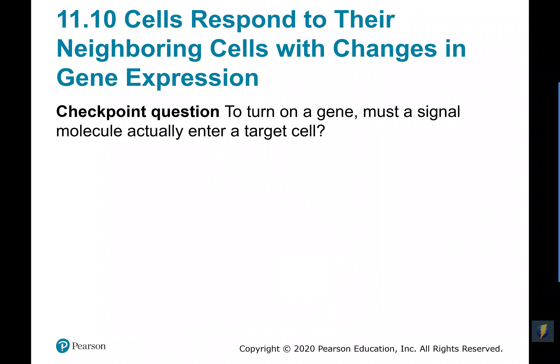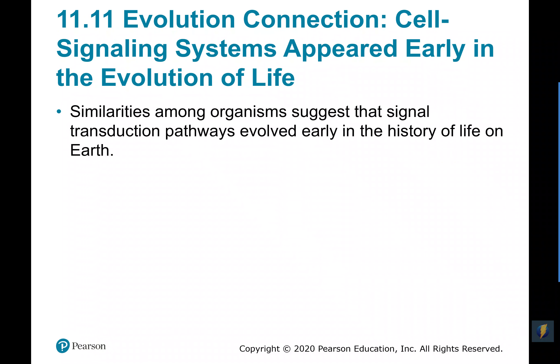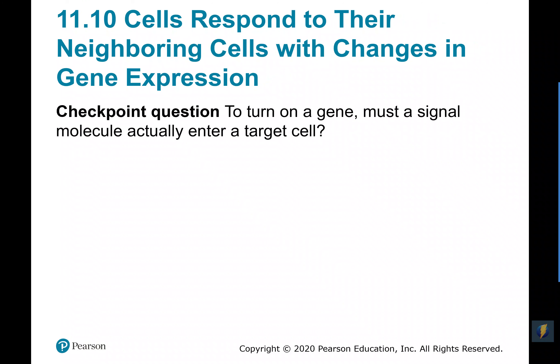The question is: to turn on a gene, must that initial signal molecule actually enter the target cell? The answer is no — it does not actually have to enter the target cell in order to turn on gene expression. Sometimes the receptor protein that responds to the signaling molecule will be on the plasma membrane of the cell, and sometimes it will be inside the cell.